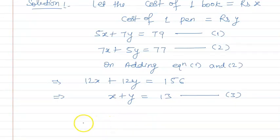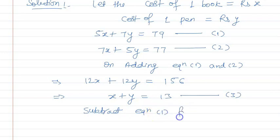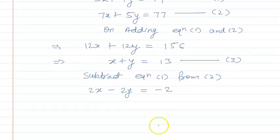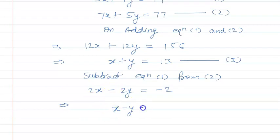Now let's subtract equation 1 from equation 2. So 7x minus 5x gives 2x, and 5y minus 7y gives minus 2y, which will be equal to 77 minus 79, that is minus 2. If we divide both sides by 2, we get x minus y is equal to minus 1. Let's call this equation 4.